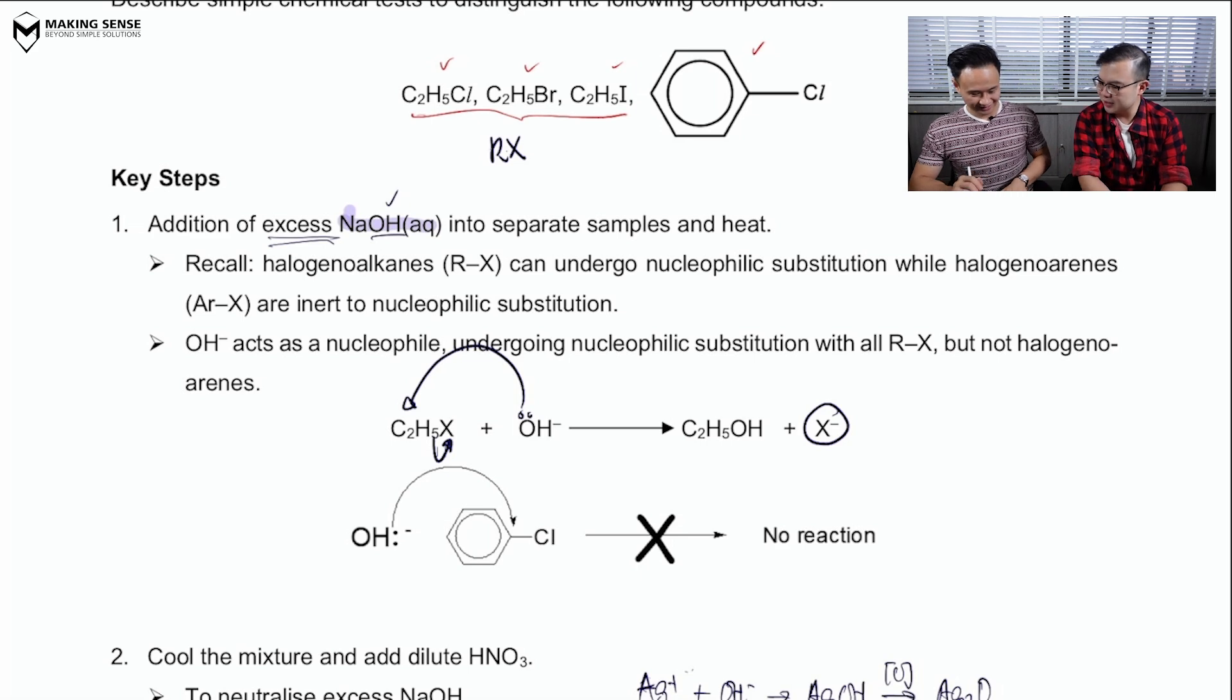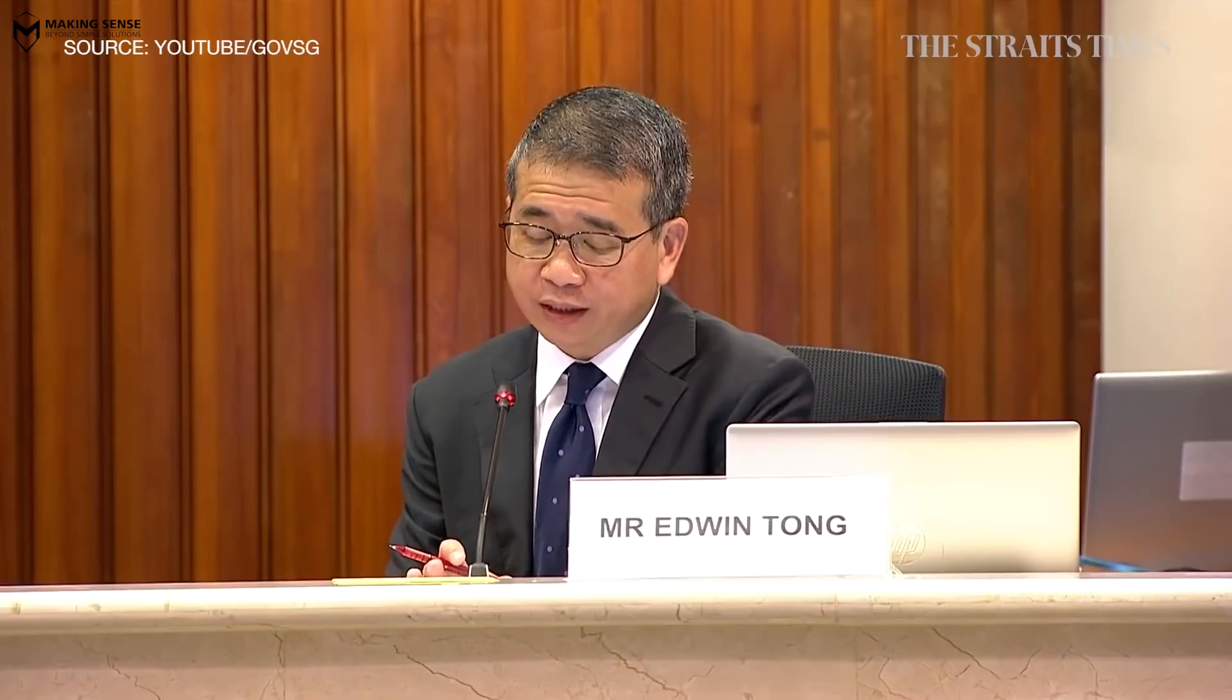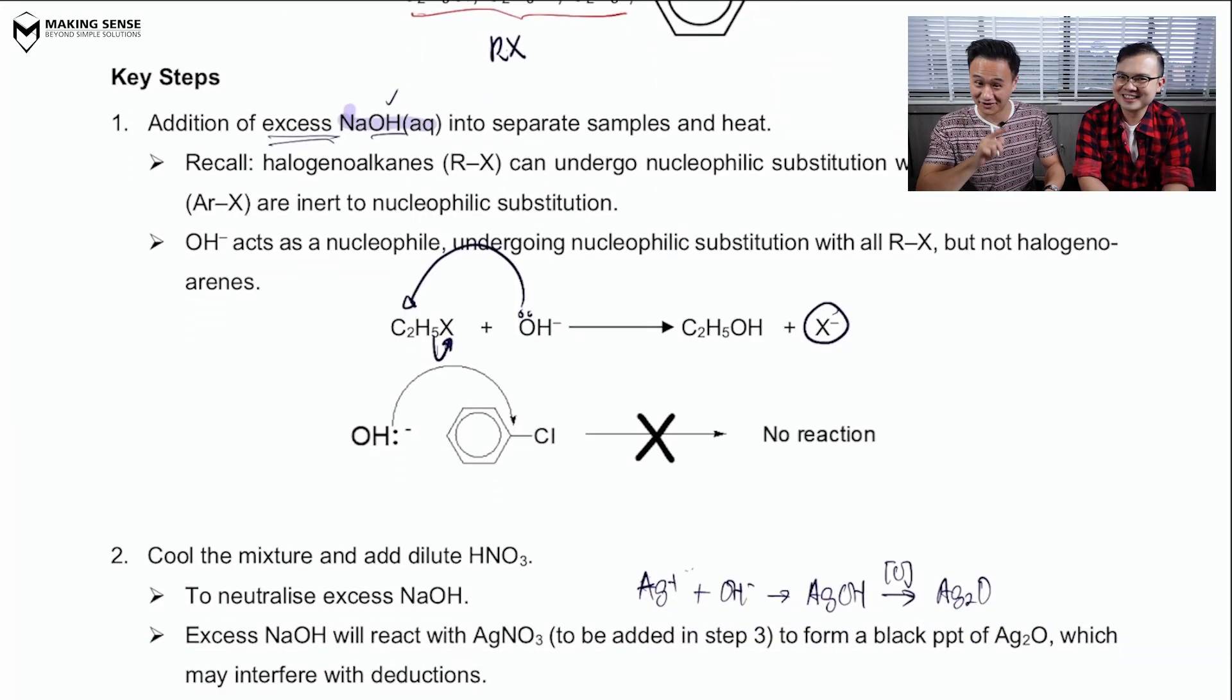Now, this X-, then there's no observation. Don't interrupt me, Mr. Leong. I'm not done yet. Don't interrupt me. Okay. So, if you do the same thing for halogenyl arenes, you won't see an X-, right? But we can't stop there, like what Mr. Leong said. X- is colorless.